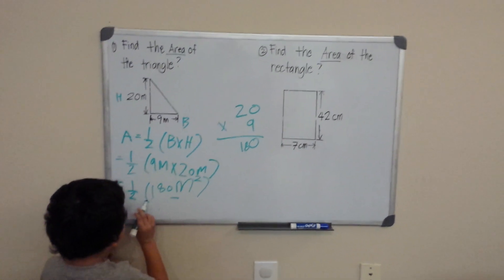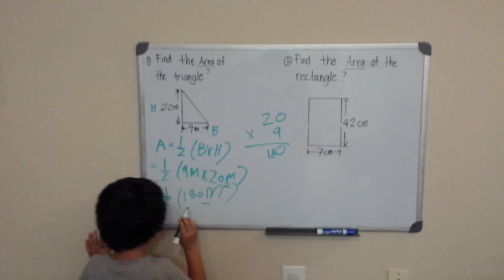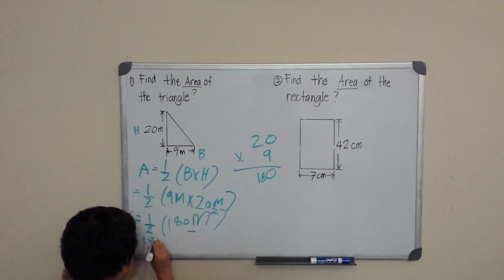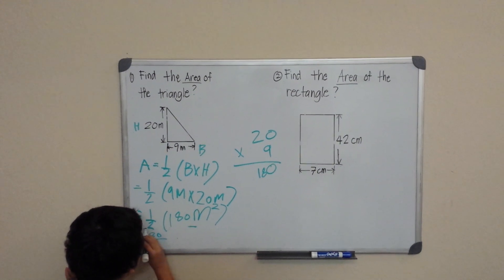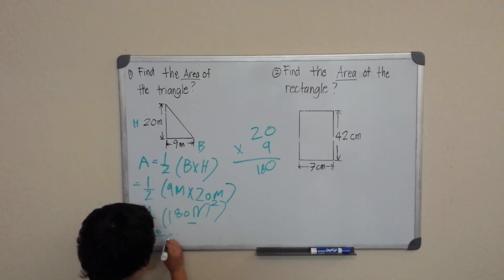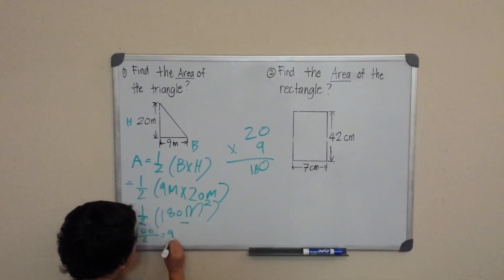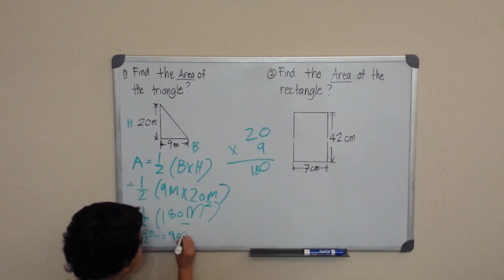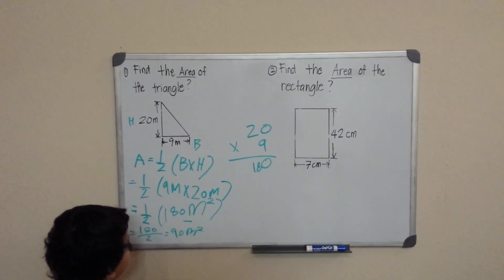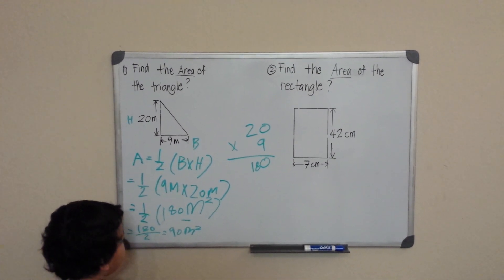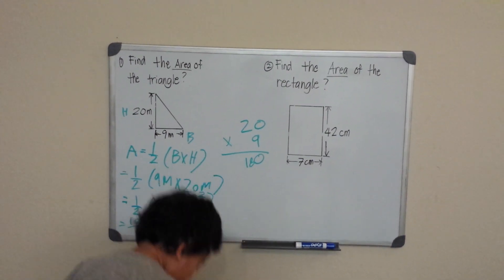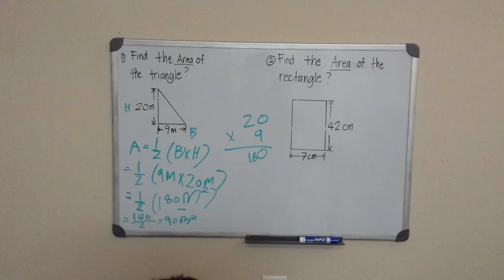So one times 180 equals 180, divided by 2 is 90 meters squared. Now I will erase this.